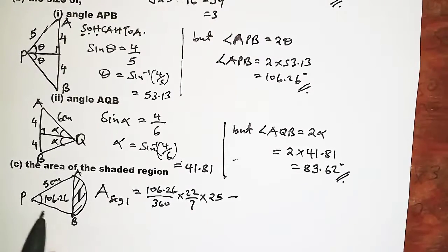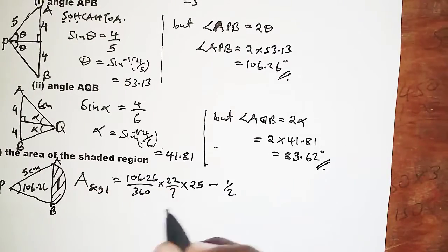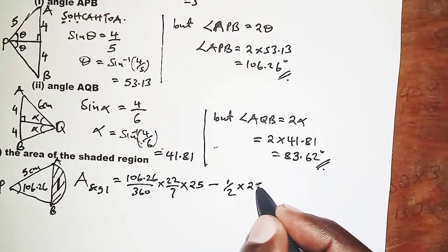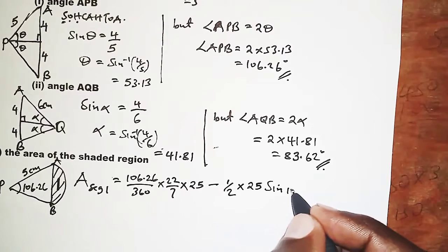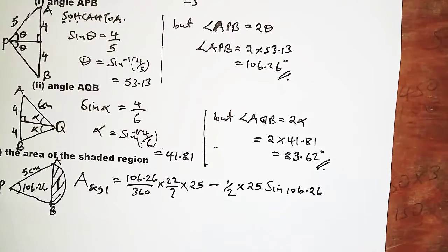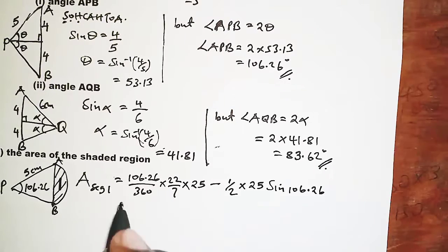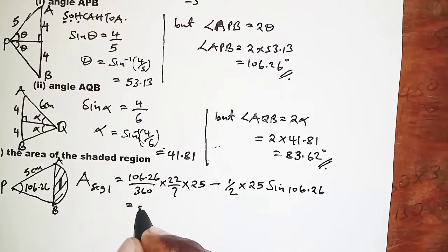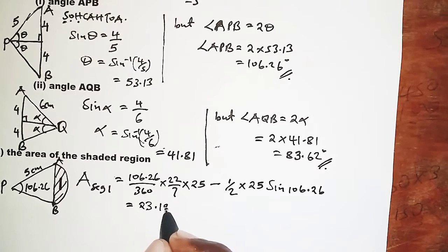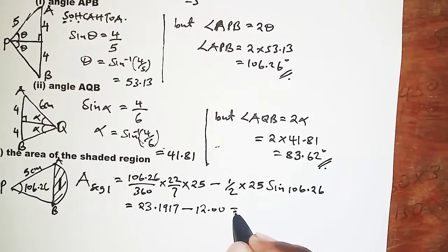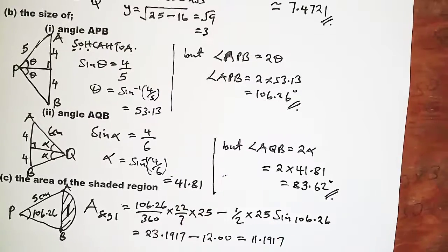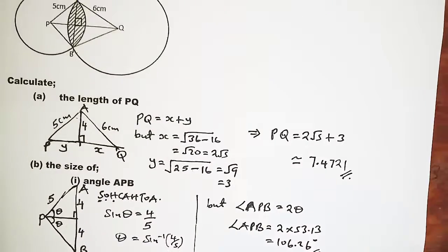Subtracting the area of triangle, which is one half times r squared times sine of 106.26 degrees, that is half times 25 times sine 106.26. This gives 23.1917 minus 12.00, so area of segment 1 is approximately 11.1917 square centimeters.